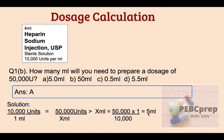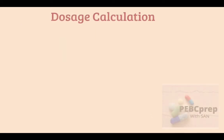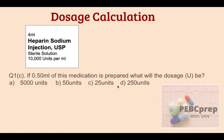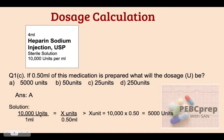Next part of the same question: if 0.50 ml of this medication is prepared, what will the dosage be in units? Options: a) 5,000 units, b) 50 units, c) 25 units, d) 250 units. This is dividing by two — 1 ml gives 10,000 units, so half ml gives half the amount. The answer is a, 5,000 units. Solution: 10,000 units × 0.50 ml = 5,000 units.